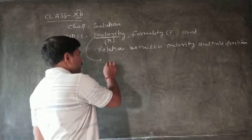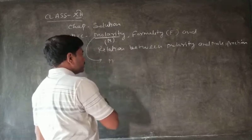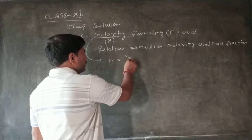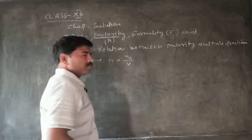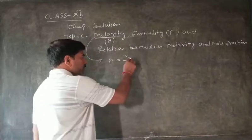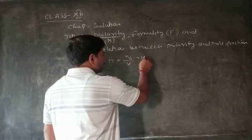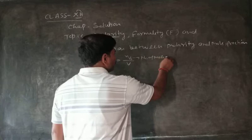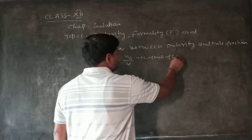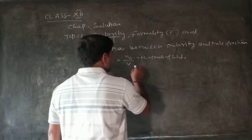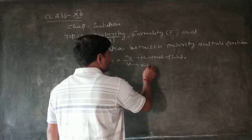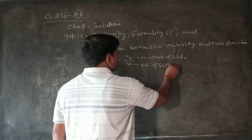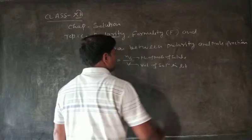The mathematical relation: molarity is represented by capital M. M is equal to NB upon V, where NB is equal to the number of moles of solute, and V is equal to the volume of solution in liters.